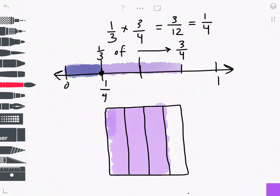And then what I'm looking for here is 1 third of 3 fourths. So my next step is going to be to divide this rectangle into thirds.